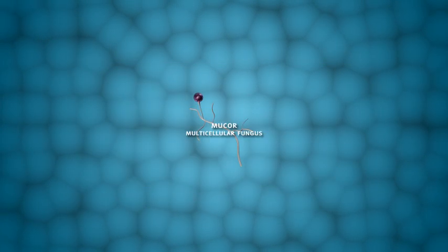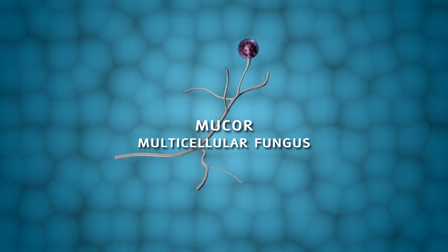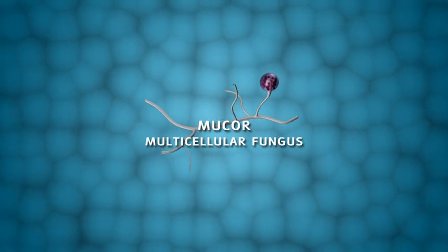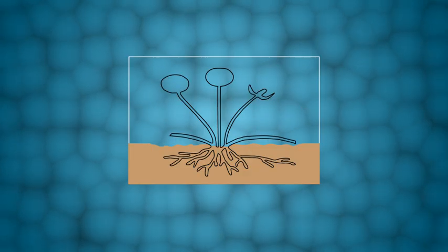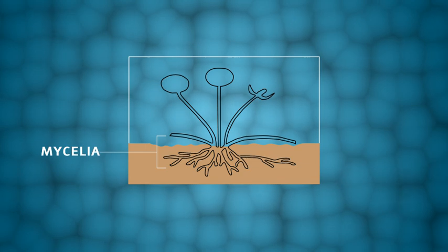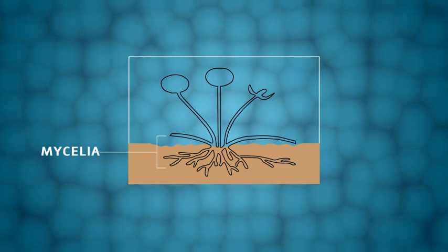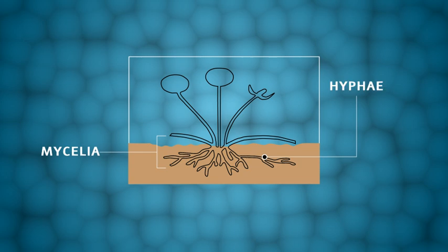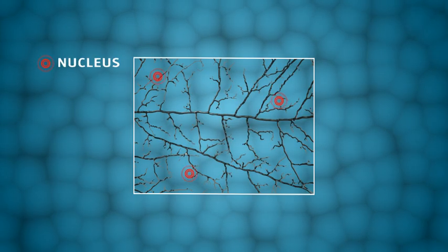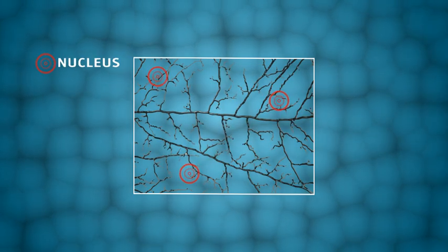Mucor is a multicellular fungus. The fungus is organized into mycelia, which is made from thread-like structures called hyphae. Most hyphae contain many nuclei and are said to be multinucleated.